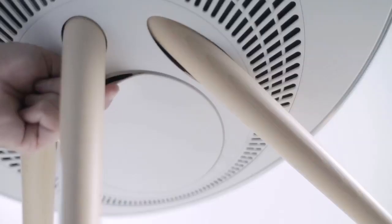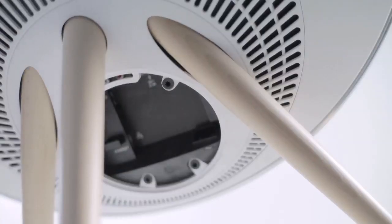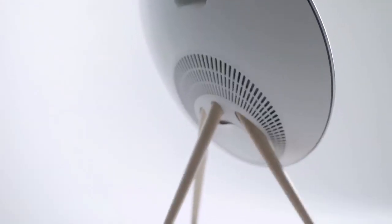Now take the Beoplay A9 out of the box and open the back plate to access the connection controls. Select one of three sound modes: wall, corner, or free standing, depending on where your Beoplay A9 will be placed. This gives you the best acoustic performance.